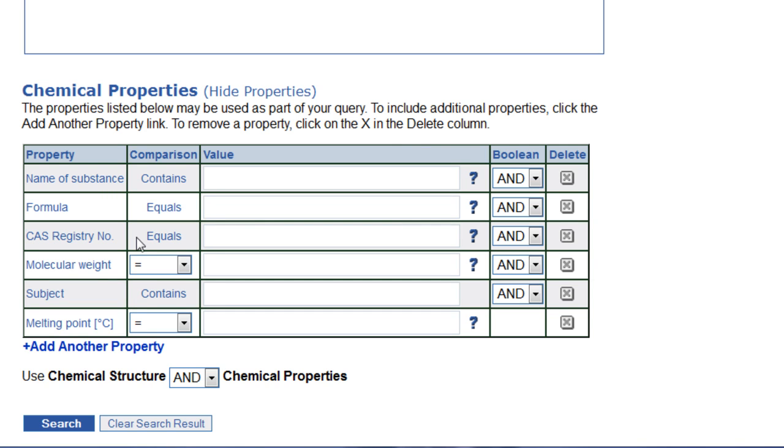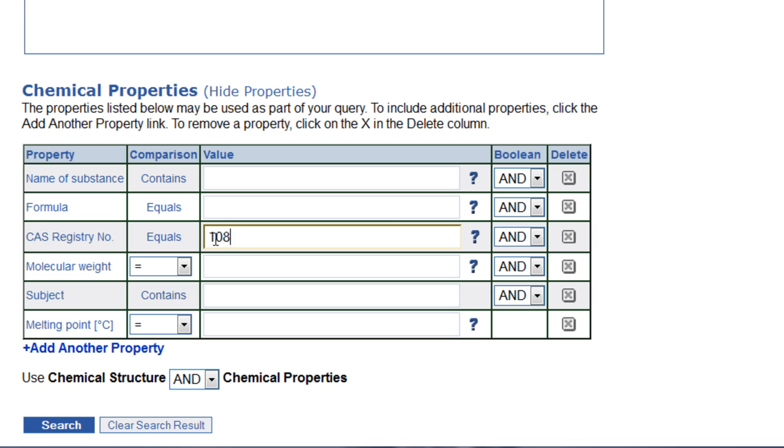The easiest way to search for information on a particular chemical is to enter its CAS registry number if it is known. Then click on search.